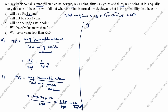Next, part C: will be a 50 paise OR rupee 2 coin. 'Or' means we add them together. 50 paise coin is 100, plus rupee 2 coin is 50. Divided by 250 — this is number of favorable outcomes divided by total number of possible outcomes.